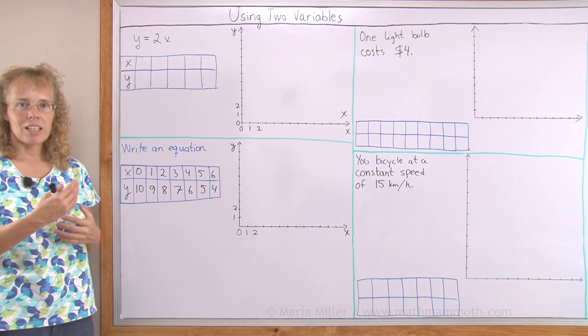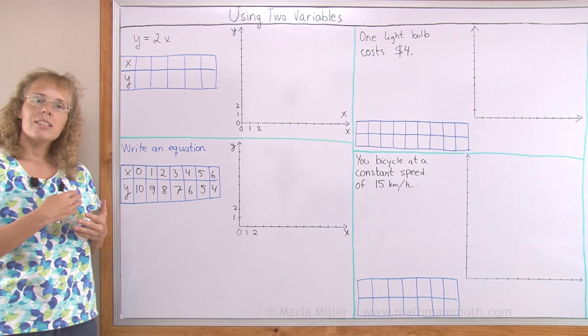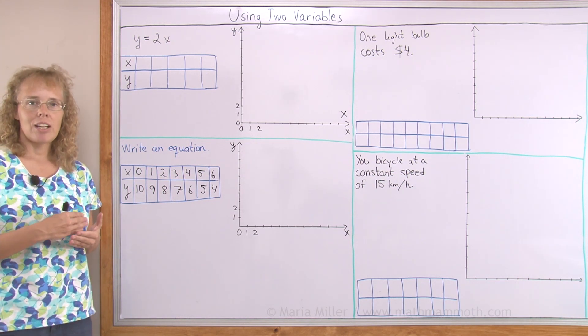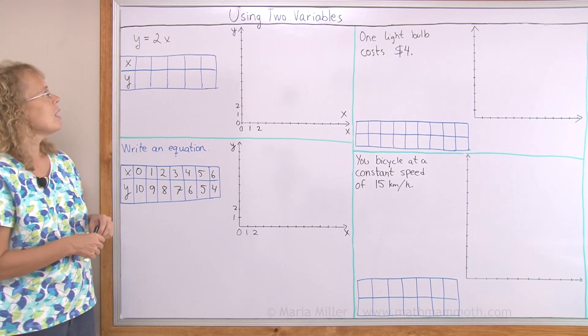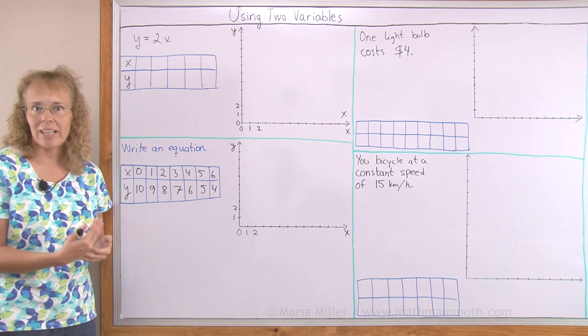We're going to think of it as a relationship between y and x where y is a variable its value can change and x is a variable so its value can change too. But this relationship is always true that y equals 2x. Y is double x.